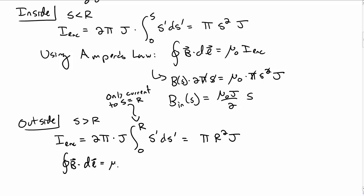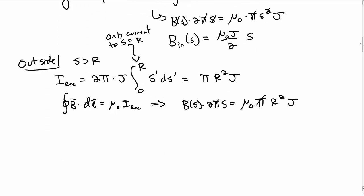Using Ampere's law, magnetic field times circumference equals μ₀ π r² j. After cancellations, the magnetic field outside as a function of s is μ₀ j r² over 2s.